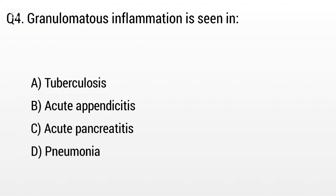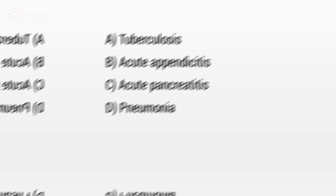Question 4. Granulomatous inflammation is seen in: Option A: Tuberculosis, B: Acute appendicitis. But the right answer is Option A: Tuberculosis.